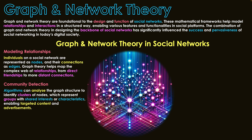The second area is community detection. Algorithms can analyze the graph structure to identify clusters of nodes, representing groups with shared interests or characteristics, enabling targeted content and advertisements. A simple example is groups on social media — pages created by users where people join due to shared interests. If we identify these clusters and they align with what our business markets, we can pay for advertising targeting those groups to maximize return and potentially gain new customers.